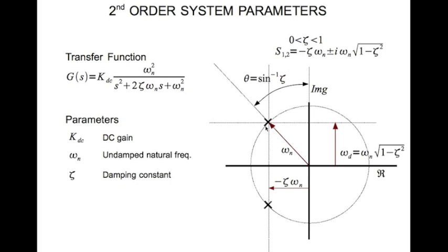Now the angle that the line drawn from the origin to the root makes with the imaginary axis is given by theta which is sine inverse of zeta. That again you can derive. So this distance is zeta omega_n, this is omega_n, so this distance by this distance here gives you the sine of this angle. And therefore theta equal to sine inverse of zeta.